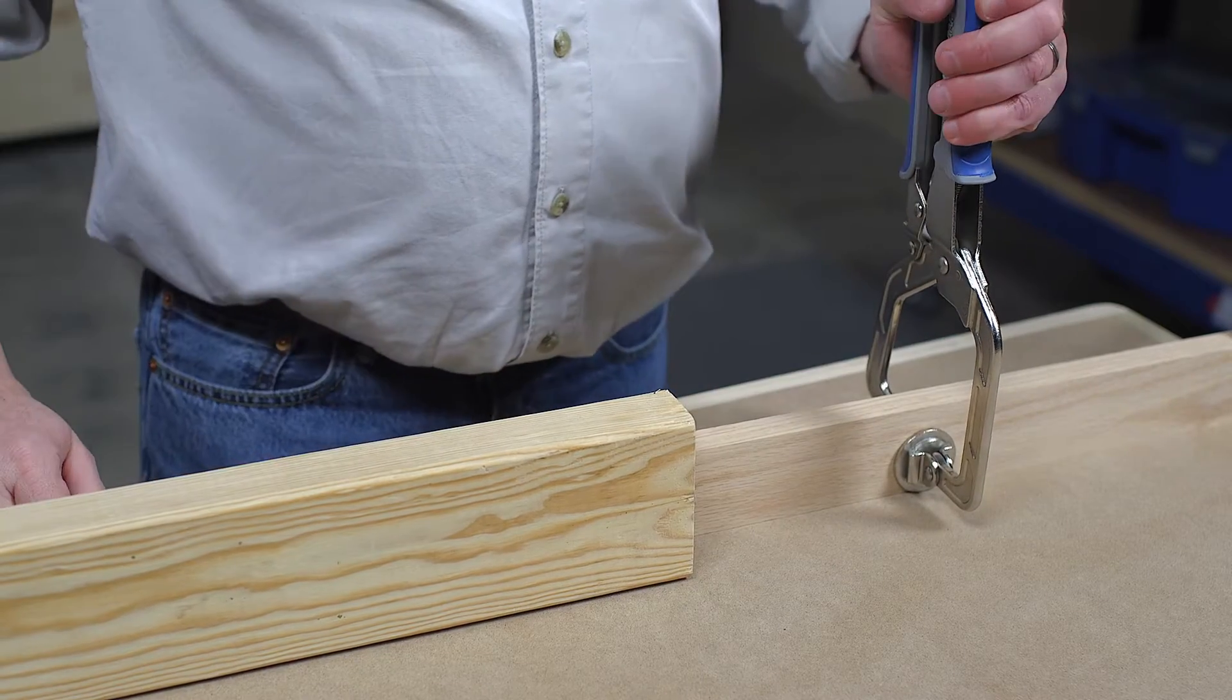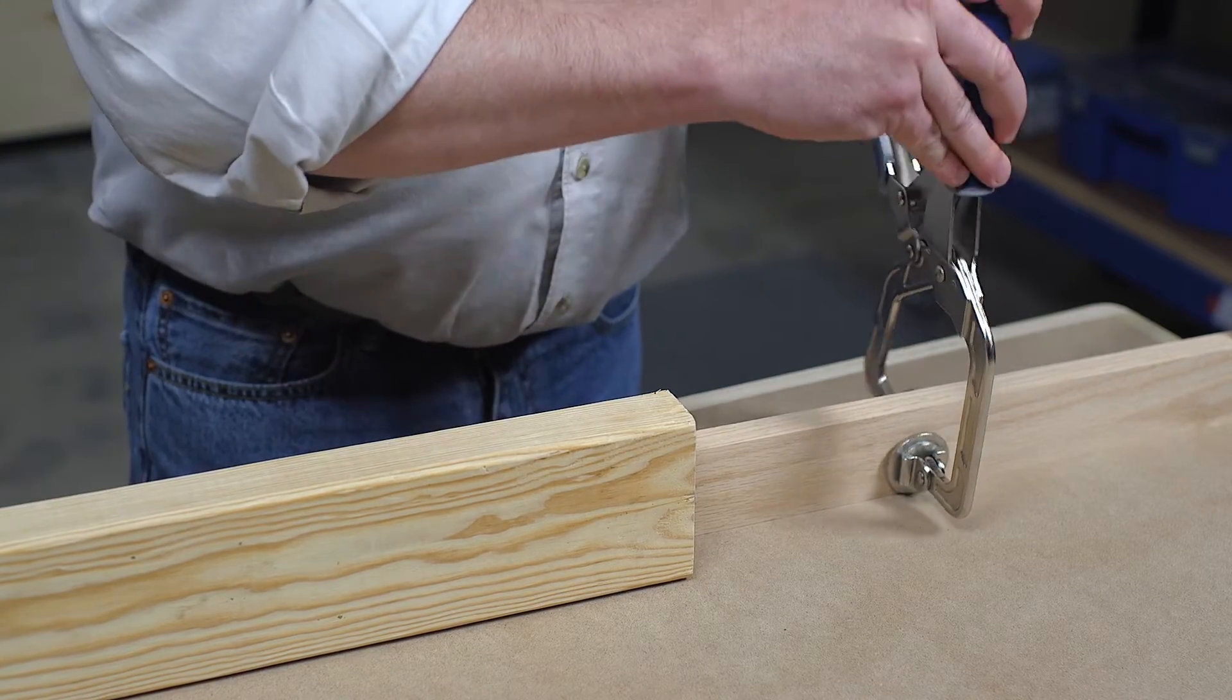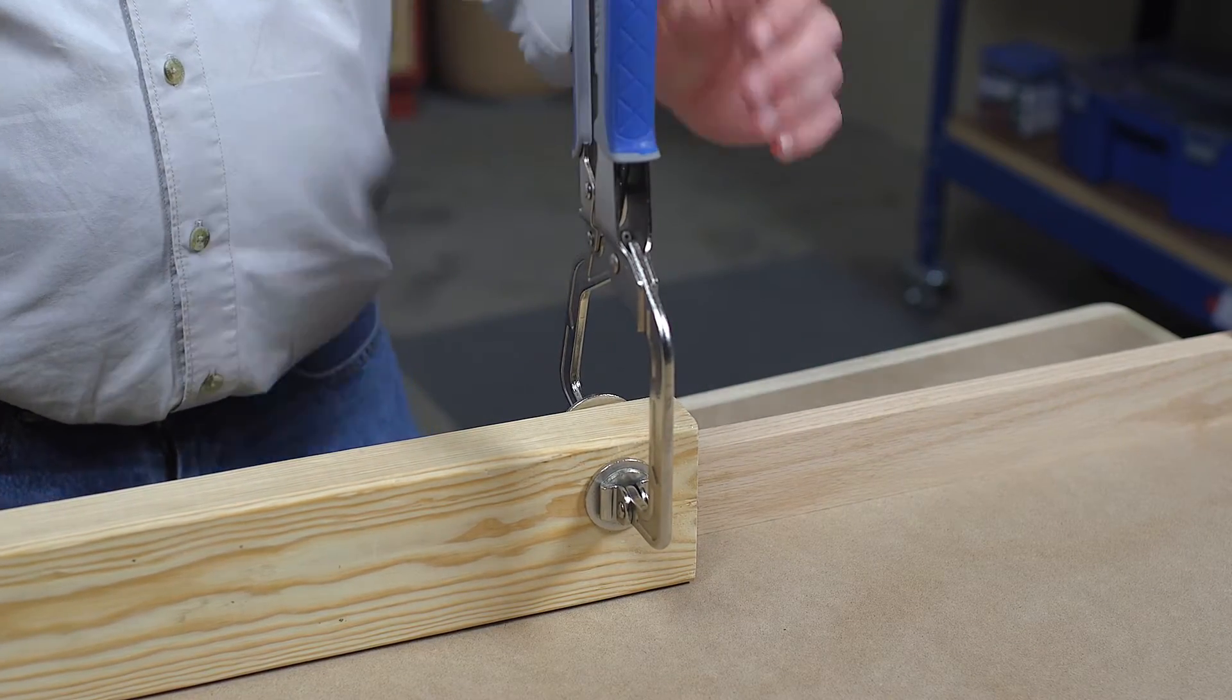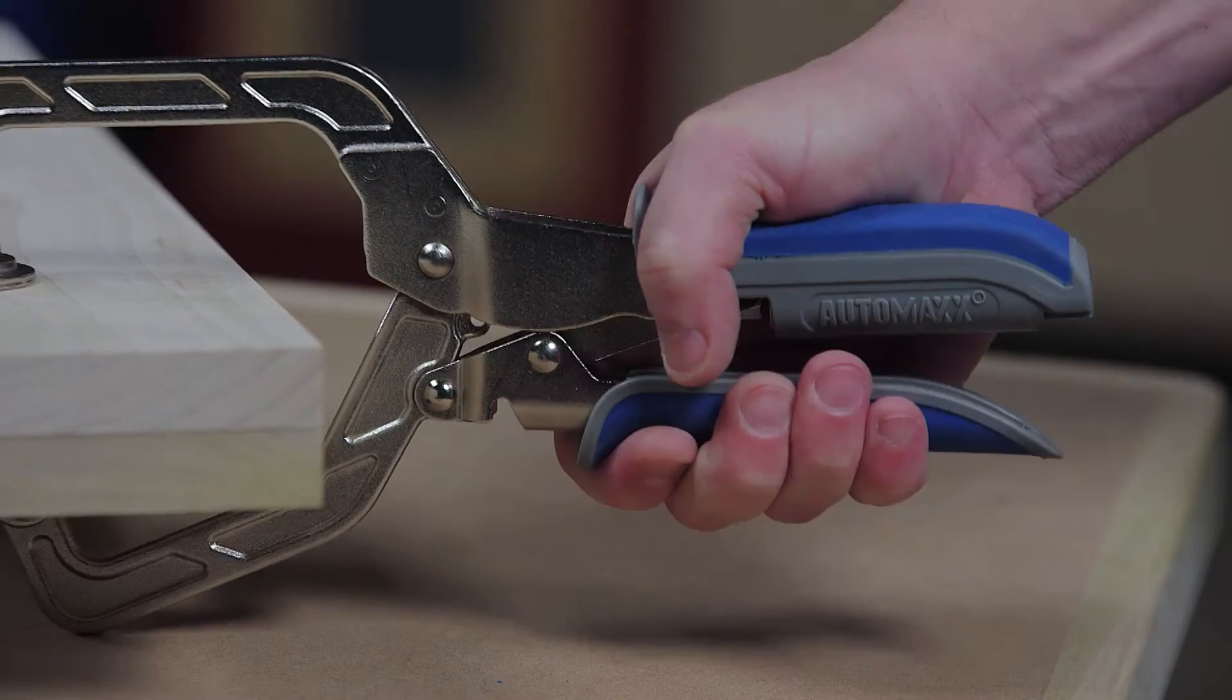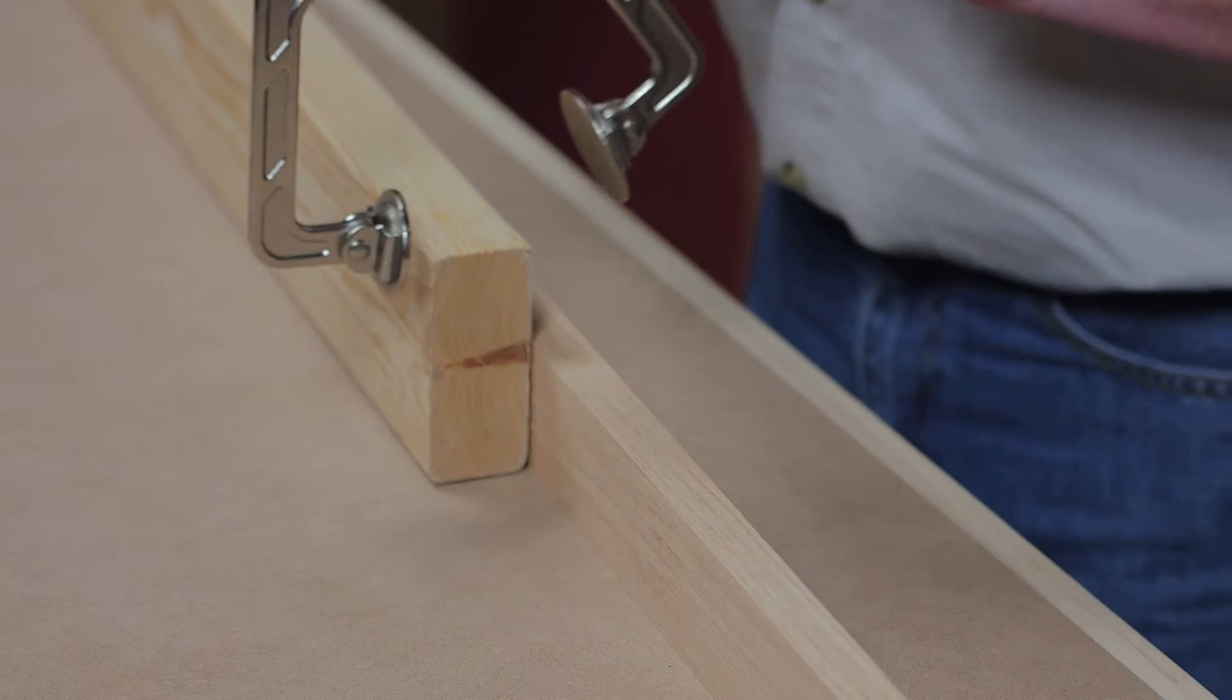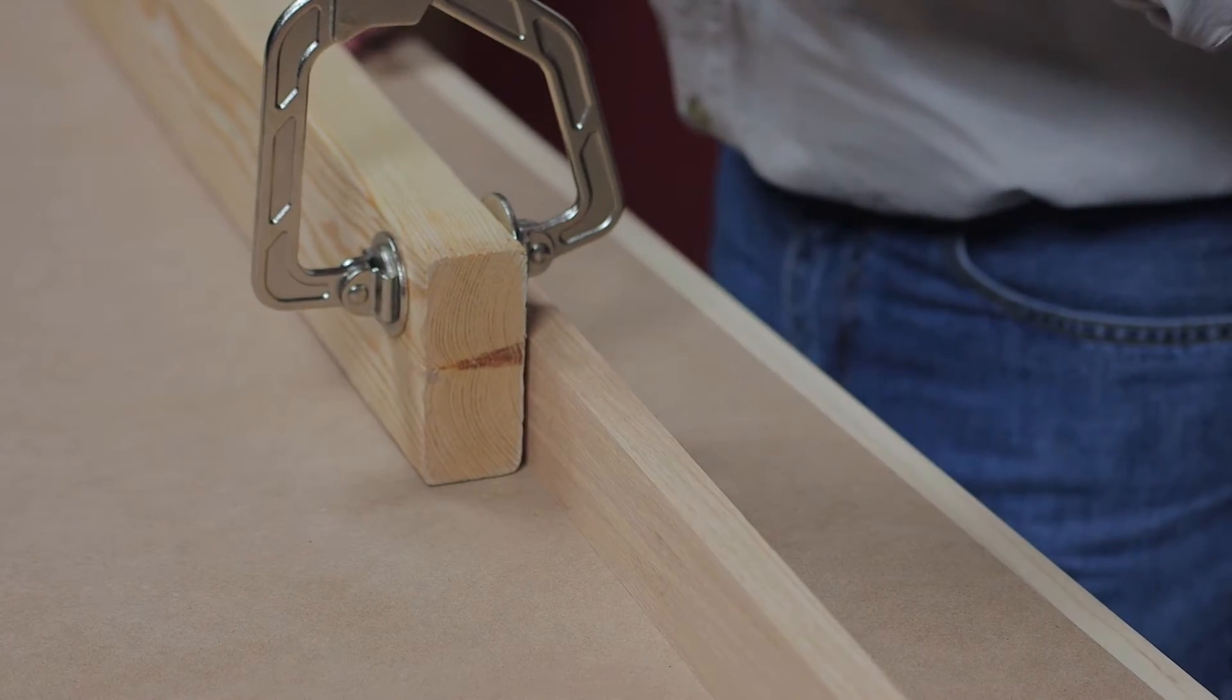Thanks to AutoMax Auto Adjust Technology, there's never a need to readjust wood project clamps when you move from one material thickness to another. Simply squeeze the clamp handles and AutoMax Technology adjusts the clamps automatically to the correct thickness, all while keeping the clamping pressure you desire.